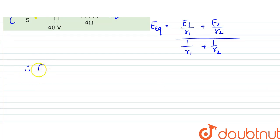So therefore here the E equivalent would be equal to E1 by R1. So it is 40 by 4 plus 0, divided by 1 by 4 plus 1 by 4, which is equal to 40 by 4,